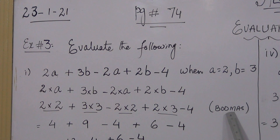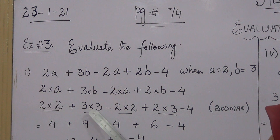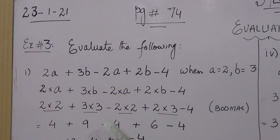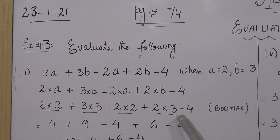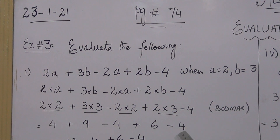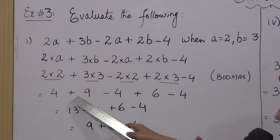There are three operators in the whole expression: one multiplication operator, one addition operator, and one subtraction operator. According to BODMAS rule, among all three, multiplication is solved first. So we have to multiply the values first: 2 into 2 is 4, plus — as it is — 3 into 3 is 9, minus — as it is — 2 into 2 is 4, plus — as it is — 2 into 3 is 6, minus — as it is — and 4 is copied.